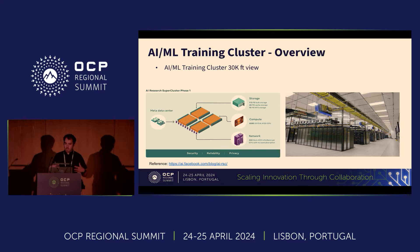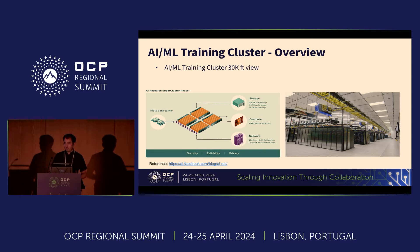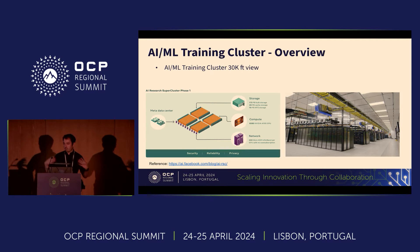Stepping back and giving everybody a 10,000 foot view of what we have today inside our training clusters: we have many, many systems that have hardware acceleration in them, and these systems are all interconnected over our backend network. Our backend network is basically the backbone of all of the data that's being consumed by our accelerated training racks, and these backend networks are basically what's consuming all of the data from each rack and keeping our training models moving forward as we train.